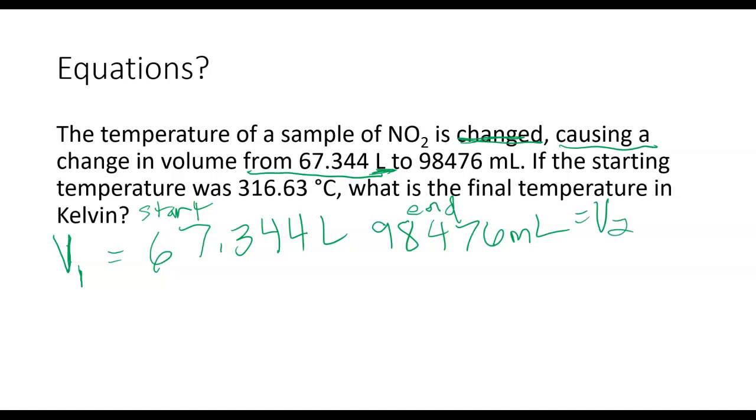My starting temperature, so my T1 is 316.63 degrees Celsius. And I'm looking for my final temperature. So my T2 is unknown. So notice I've got a V1, I've got a V2, I've got a T1, and I've got a T2.